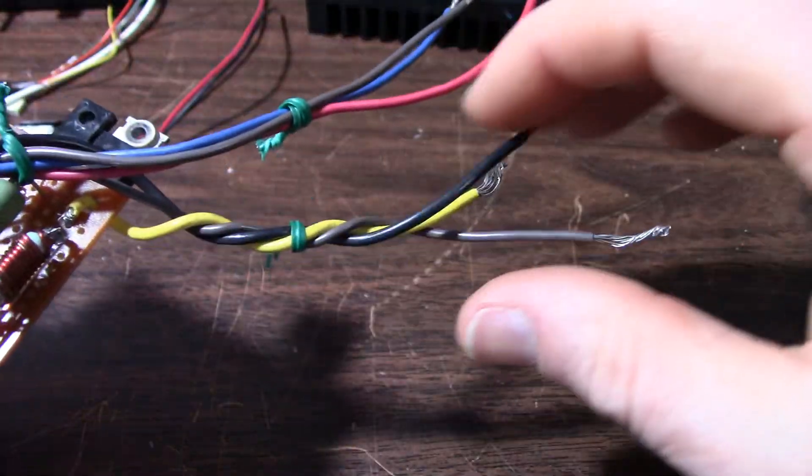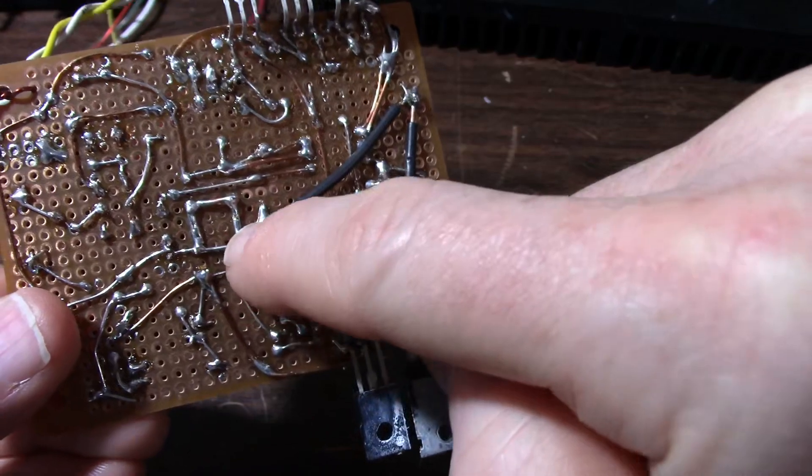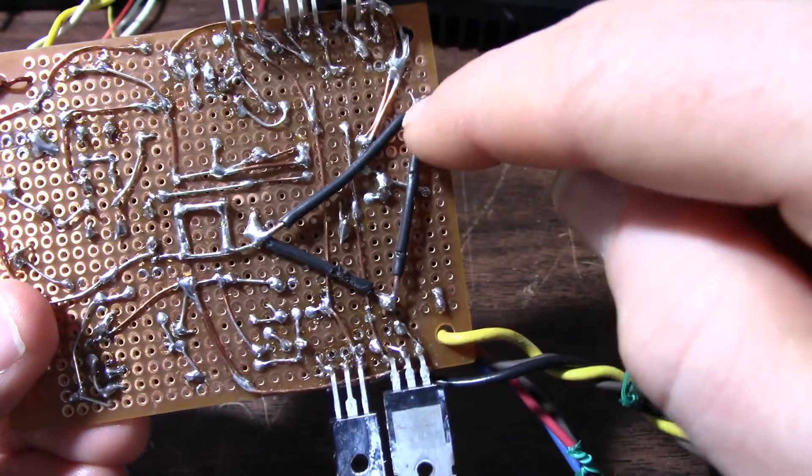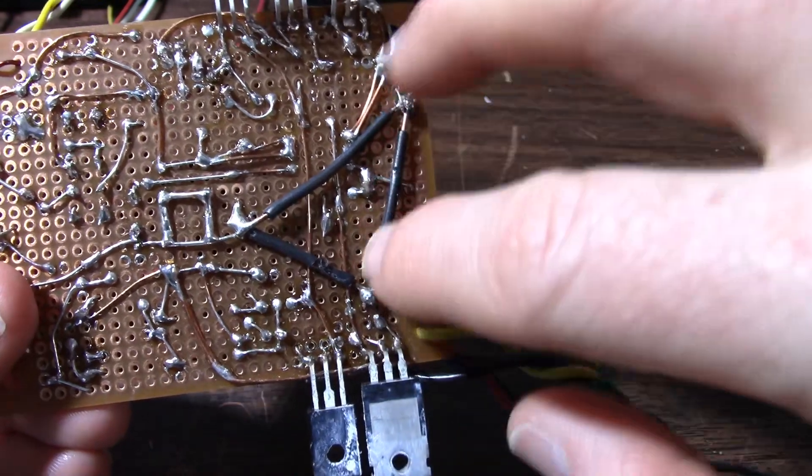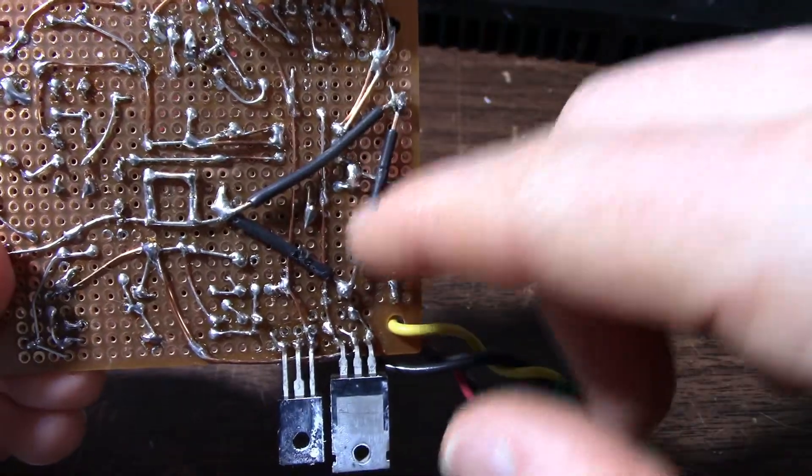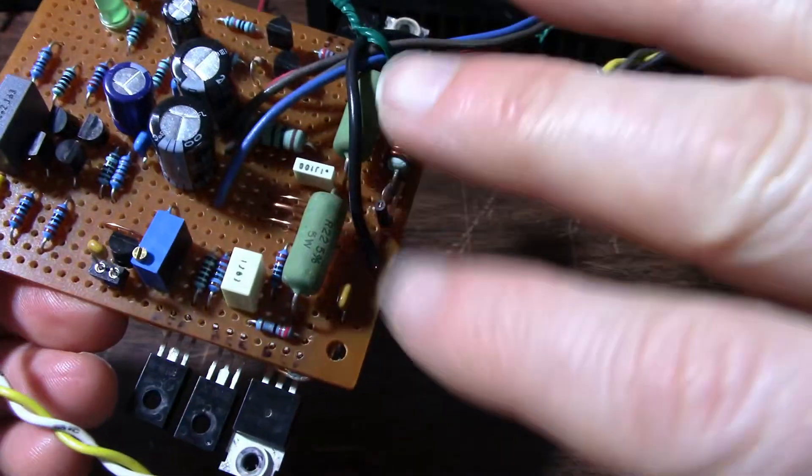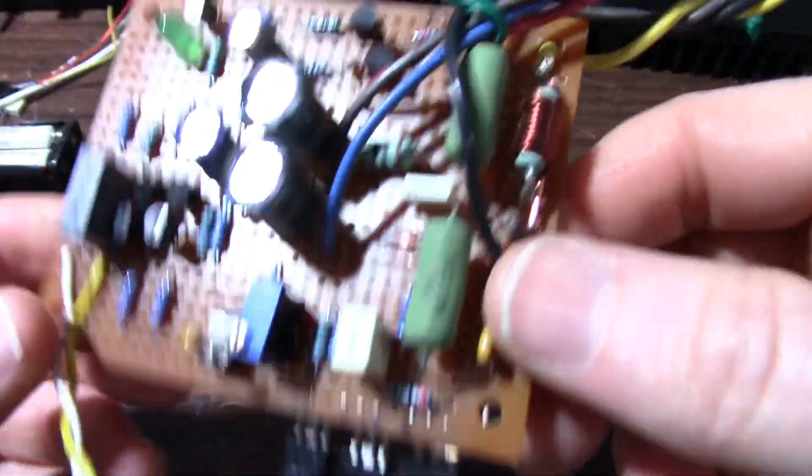Still another thing I wanted to try is I put another ground for the output. So one of the output grounds returns near to this capacitor bank here. And the other ground returns right at this point at the output stage near to the decoupling caps I'm using there. It might cause ringing on one side of the waveform and not the other. I'm just kind of curious of what it will do.